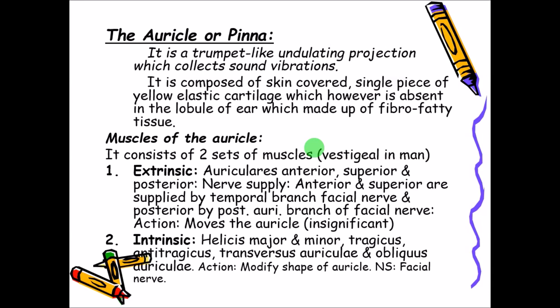The nerve supply of auricularis anterior and superior is by the temporal branch of the facial nerve, and the nerve supply of auricularis posterior is by the posterior auricular branch of the facial nerve. The action is to move the auricle in lower animals, but in human beings, even if present, the action is insignificant.